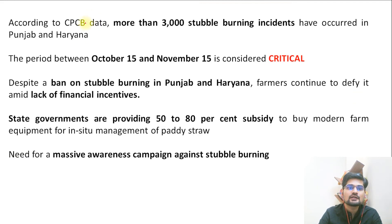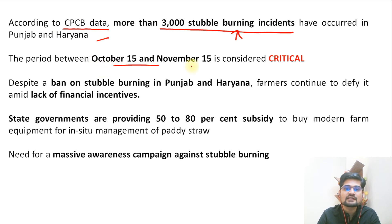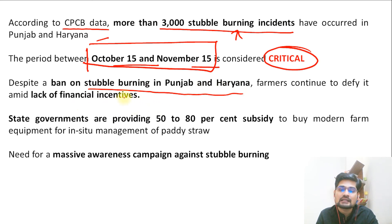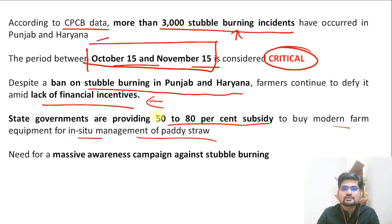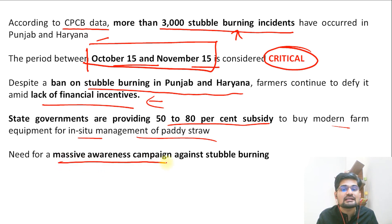Westerly and north-westerly winds at this time of year blow from the west towards the interior of India. Punjab and Haryana stubble burning concentration goes mainly to Delhi, impacting Delhi the most. According to Central Pollution Control Board data, more than 3,000 stubble burning incidents have occurred in Punjab and Haryana. The period between October 15 and November 15 is the most critical time. Despite a ban on stubble burning, many farmers don't have other incentives - clearing stubble has a cost. Governments are providing 50-80% subsidy to buy modern farm equipment for in-situ management of paddy straw. Delhi government has initiated converting stubble into bio-fertilizer, and a massive awareness campaign is also needed.